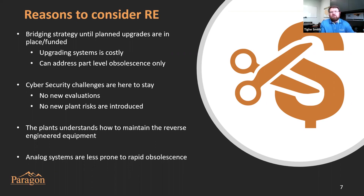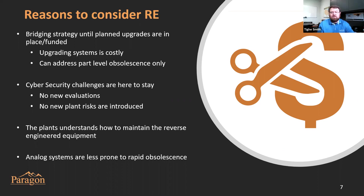One of the issues with new digital systems is that their obsolescence curves are very steep — typically a digital I&C product will go obsolete in 10 to 12 years. We're reverse engineering analog systems that date back to the 1950s in some cases and we're still able to get most of the components. Compare that to a digital system from the 1970s, 80s, 90s, or even early 2000s — they're very difficult to find replacement parts for. Analog systems are really supportable for the long term.